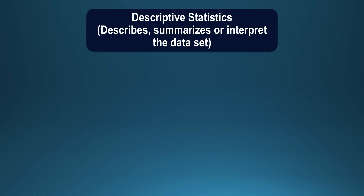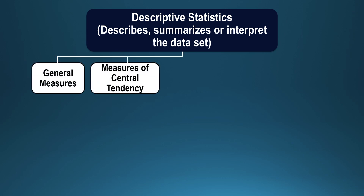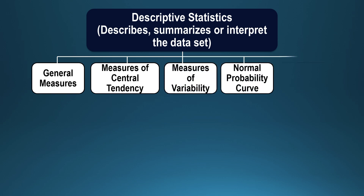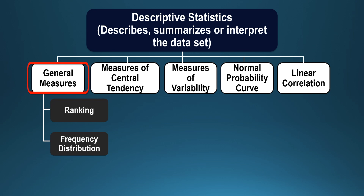As the term indicates, descriptive means which describe, summarizes or interpret the data set collected for a particular research study. Descriptive statistics include measures in general, measures of central tendency, measures of variability, normal probability curve, and linear correlation. Certain measures in general include ranking the data, preparing frequency distributions or cumulative frequency distributions, and representing data through graphs.